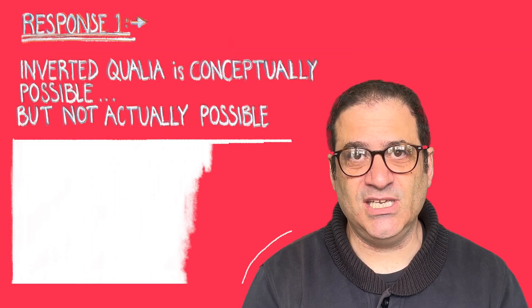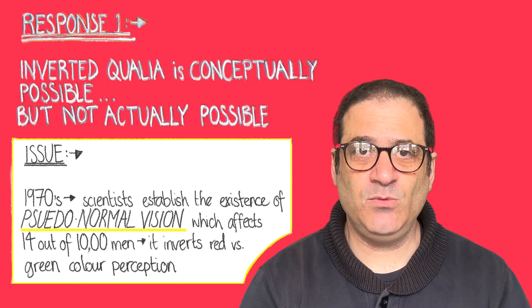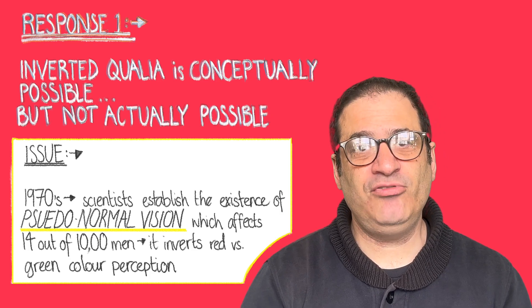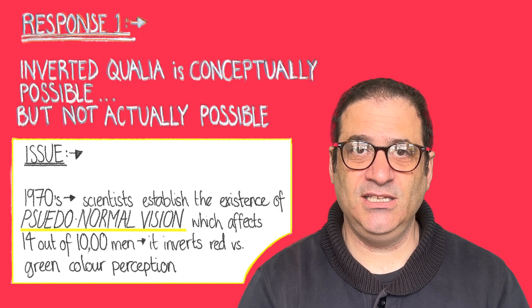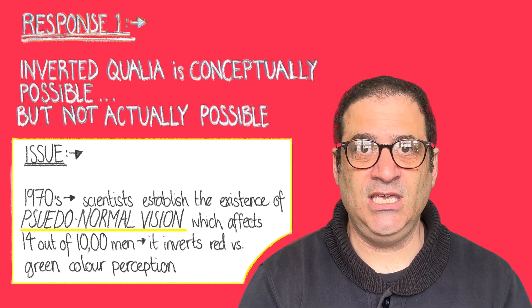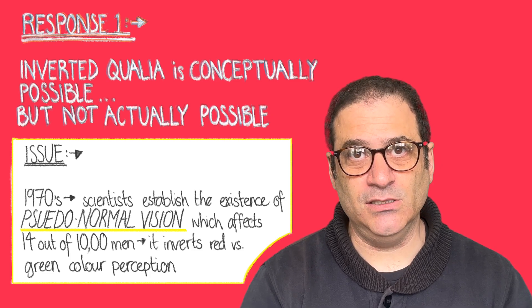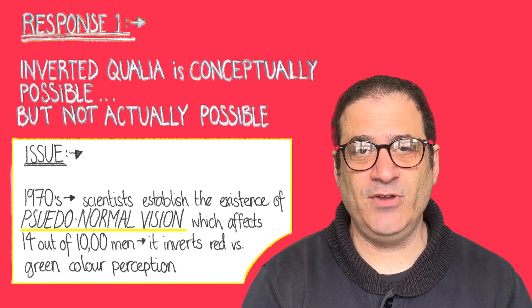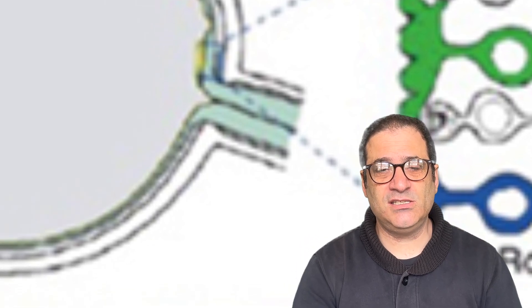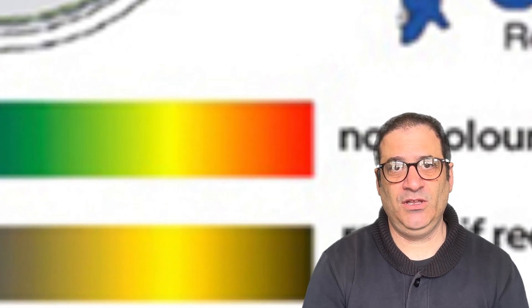What responses can functionalists give to this? There are two responses they've tried. One response is to say this isn't possible — even though it's conceptually possible, you could imagine it, it can't actually happen. The problem for those functionalists is that in the 1970s it was discovered that there's something called pseudonormal vision: 14 out of every 10,000 males seem to have color blindness between red and green to such a degree that they are likely to see green when we see red and red where we see green. Scientists think this because when looking at the retina — the rods and cones — they appear to be acting differently in these individuals. So that argument doesn't work.